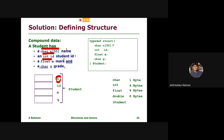These are 50 characters for the name. The character has 50 bytes. The ID is an integer — the integer is 4 bytes. The ID is 4 bytes. Marks are float — the float is 4 bytes. Finally, the grade is a character — the character is 1 byte. Now we have 59 bytes total. The student has 59 bytes.